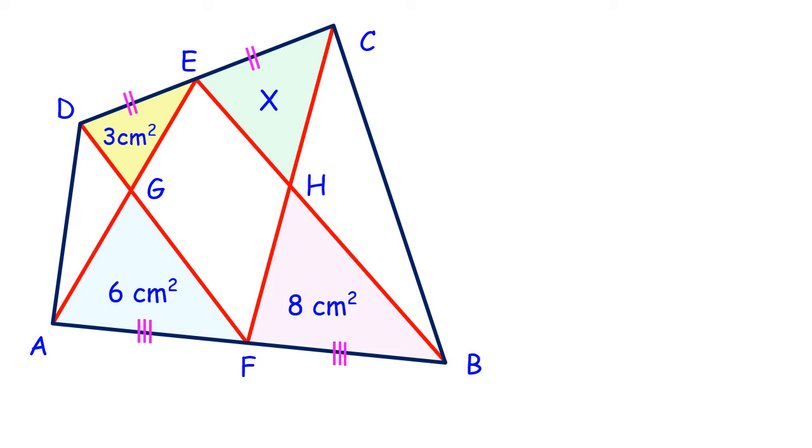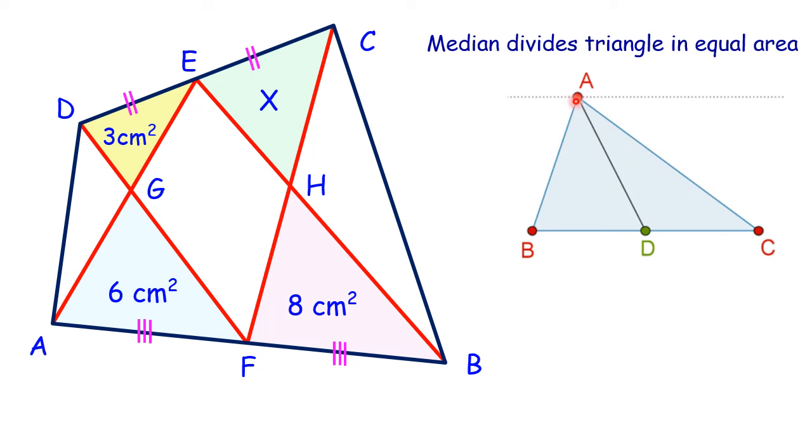Let's check the solution. We know that in a triangle, the median divides it into two equal areas. E is the midpoint, so the median will divide it into two equal areas. The proof is that the area of a triangle is half base into height. Here the height is the same for both triangles and the base length is also equal.